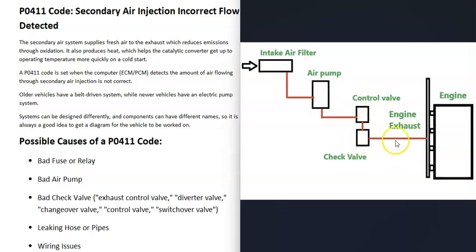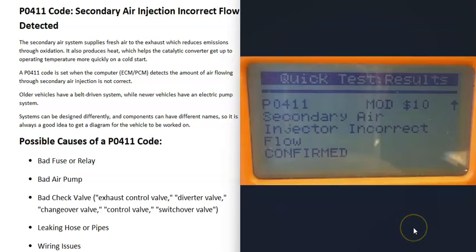After the control valve, air goes through a check valve. The check valve keeps air from going back into the system — it only lets air flow one way. After passing the check valve, air gets injected directly into the engine's exhaust, which creates the chemical process, produces heat, and causes oxidation. That's a basic overview of what's going on inside the system and the main components involved.